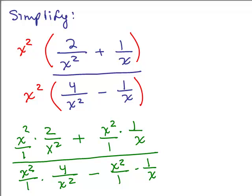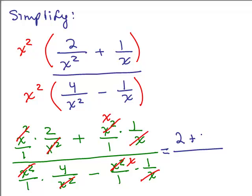What's great about this method: you immediately get rid of any of the fractions in the numerator and denominator because things will cancel. The X squareds cancel here. Over here, X squared over X cancels to give just 1X in the numerator. X squared over X squared cancels, and X squared over X gives just 1X. So in the numerator we're left with 2 plus X, and in the denominator, 4 minus X. Neither can be factored, so nothing cancels. We're done.